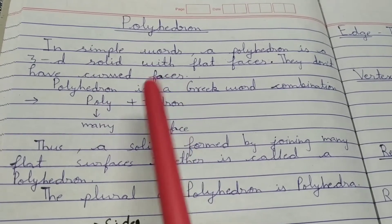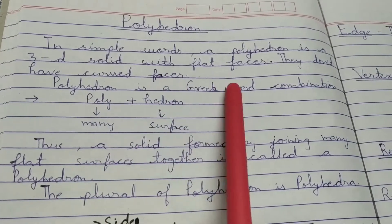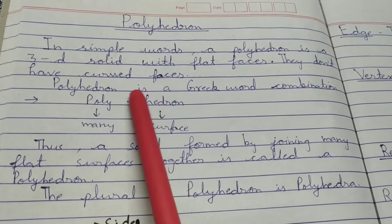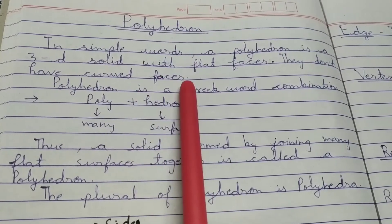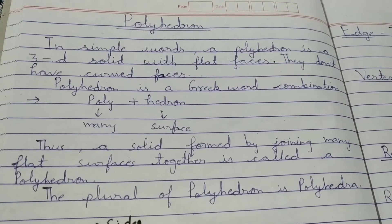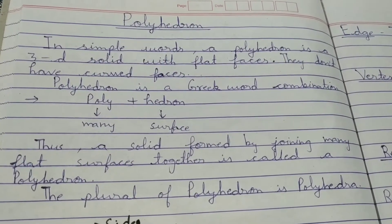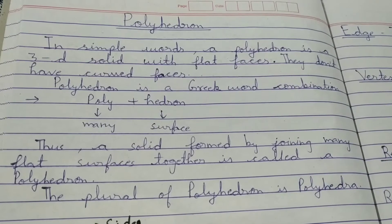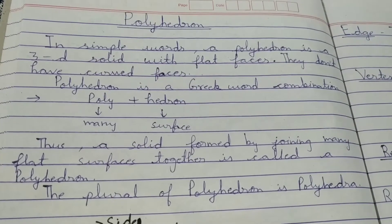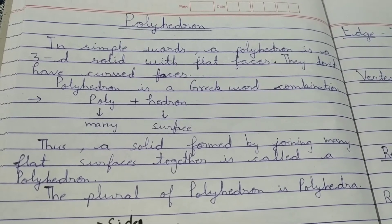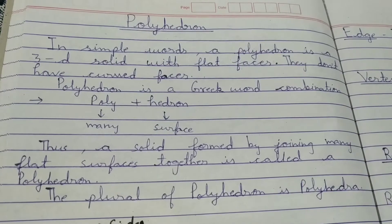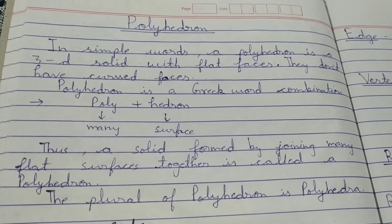Just as polygons don't have curved lines involved, similarly polyhedrons don't have curved faces. The examples of polygons include square, rectangle, pentagon, hexagon — all of these. Circles or ovals are not polygons because they don't have straight lines.